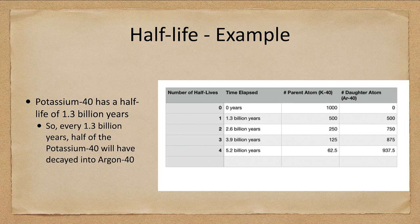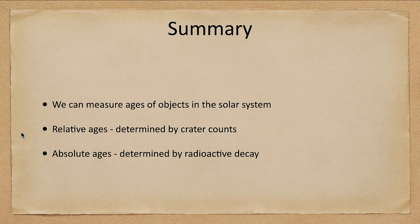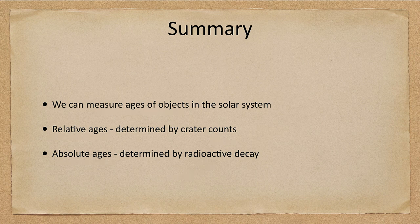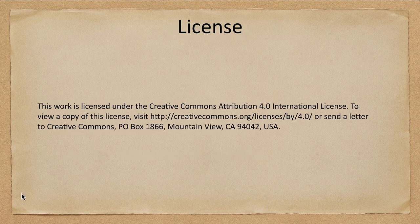So let's finish up with our summary. We talked about how we can measure ages of objects in the solar system: we looked at relative ages done by crater counting, and absolute ages done by radioactive decay using the half-life. That concludes this lecture on determining ages in the solar system. We'll be back again next time for another topic in astronomy — until then, have a great day everyone, and I will see you in class.